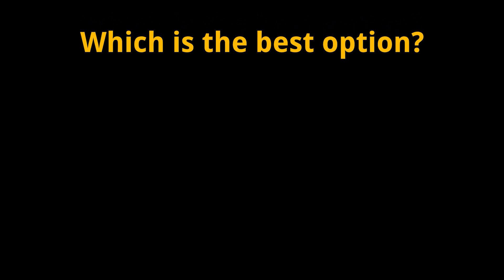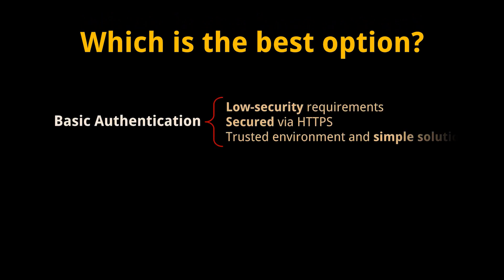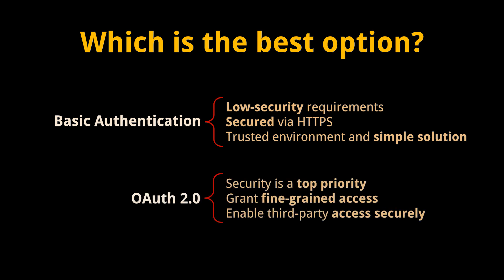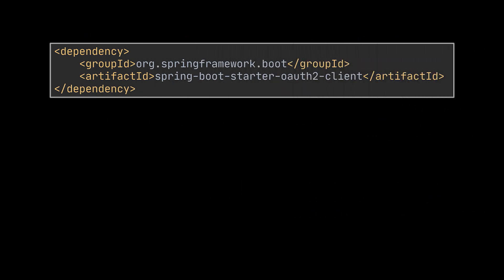So which protocol should we pick? We should use basic authentication when the application has low security requirements, the communication channel is secured via HTTPS, and when we have a trusted environment and want a simple solution. On the other hand, use OAuth2 if security is top priority, if we need to grant fine-grained access to resources, and if we want to enable third-party applications to access our resources securely.